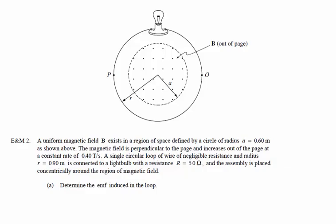In this problem, we have a magnetic field coming out of the page, and it exists in a region of space defined by a circle of radius 0.6 meters. The magnetic field is perpendicular to the page and it's increasing out of the page at a rate of 0.4 teslas per second. A single loop of wire with negligible resistance and radius of 0.9 meters is connected to a light bulb with a resistance of 5 ohms, and the assembly is placed concentrically around the region of magnetic field.